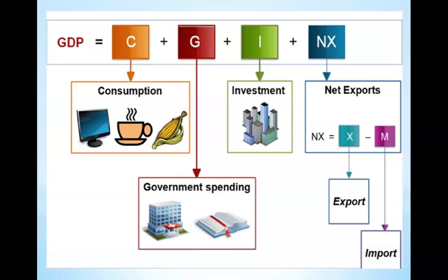GDP, or gross domestic product, can be measured through two different approaches: the expenditures approach and the income approach. The expenditures approach states that GDP equals C plus I plus G plus XN, C being consumer spending, I as investments, G as government spending, and XN as net exports.